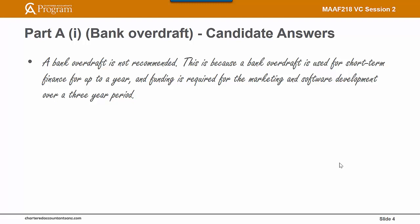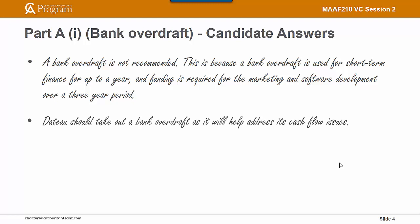Firstly, it has provided a recommended course of action. And secondly, it has provided a justification based on the specific circumstances mentioned in the scenario. The next answer here is that DATO should take out a bank overdraft as it will help address its cash flow issues.